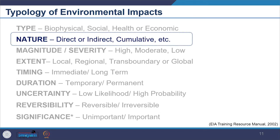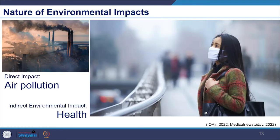Impact can be both direct and indirect. For example, direct impact of a project could be air pollution or water pollution, which may further indirectly impact the health of the people living in the influence area. Indirectly impacting the people who live there can happen due to exposure to contaminants and pollutants which build up in the food chain.